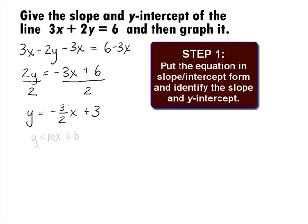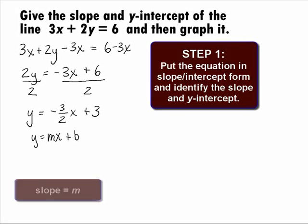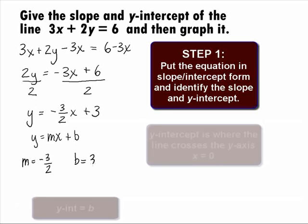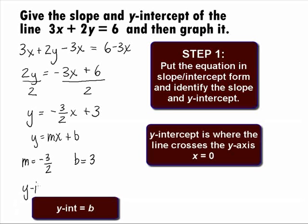Lining up the given equation with the slope-intercept equation of y equals mx plus b, we can locate the slope and the y-intercept. The slope is m, which is the coefficient in front of x. In our example, the slope would be negative 3 halves. The y-intercept is b, which is the constant term. In our example, b equals 3. The y-intercept would be the point (0, 3).